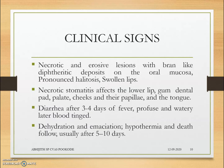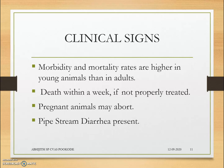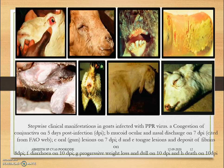Further clinical signs include swollen lips, hyperemic oral mucosa, bran-like deposits in the oral mucosa, necrotic stomatitis, upper lip erosion, and small ulcers on the dorsum and ventrum of the tongue. Dehydration, emaciation, hypothermia, and death occur within five to ten days if untreated. Pregnant animals will abort. Pipe-stream diarrhea is present. Morbidity and mortality rates are higher in young animals than in adults.